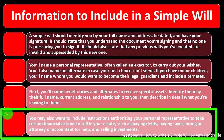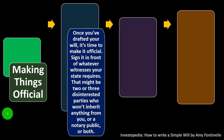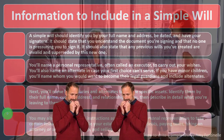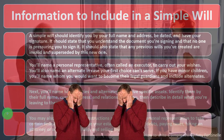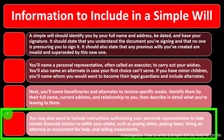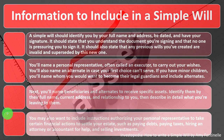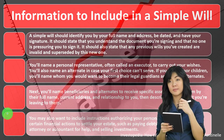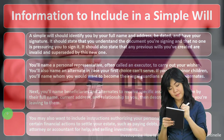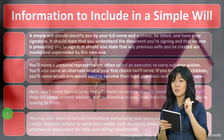You'll name beneficiaries and alternates to receive specific assets, identifying them by full name, current address, and relationship to you, and describe in detail what you're leaving to them. You may also want to include instructions authorizing your personal representative to take certain financial actions to settle your estate — such as paying debts, paying taxes, hiring an attorney or accountant, and selling investments. At death there may be both assets and liabilities that need to be managed and distributed.